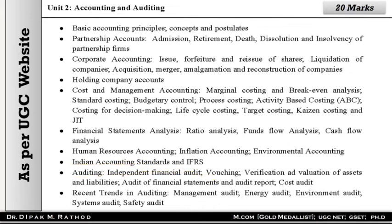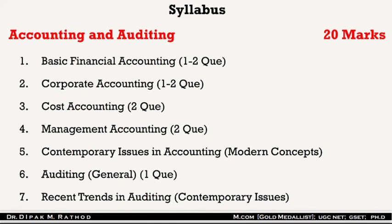This syllabus is very wide. After studying it, you can divide it into 5-6 parts: First — Basic Financial Accounting; Second — Corporate Accounting (1-2 questions); Third — Cost Accounting (2 questions); Fourth — Management Accounting (2 questions); Fifth — Contemporary Issues in Accounting, that is modern concepts; and Auditing (2-3 questions). So for 20 marks total, you need to prepare across seven different subject areas within this one unit.